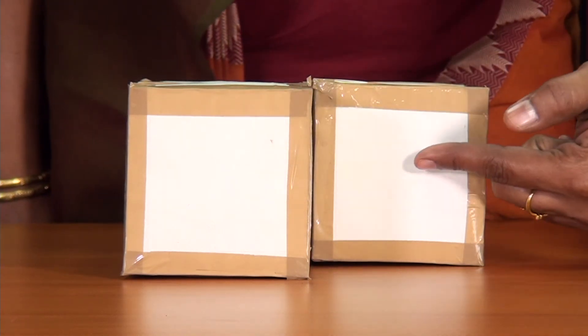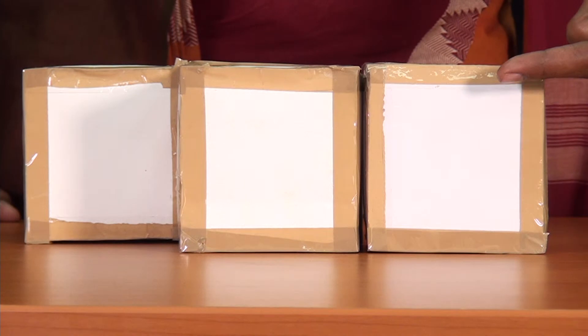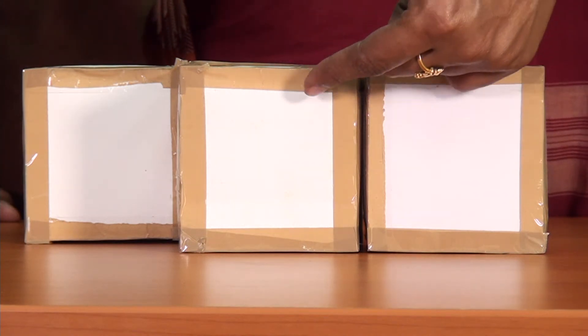Now let us move to the side view of the same object. What do you observe? Yes, there are 3 squares.